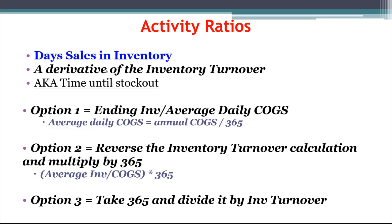We can take a derivative of the inventory turnover ratio to calculate days sales in inventory, sometimes referred to as the time until stock-out. It tells us two things: how many days on average it will take us to sell this inventory, and if we couldn't buy any more inventory due to supply chain issues, how long our inventory will last until we stock out. The options are the same as with days sales in accounts receivable: ending inventory divided by average daily cost of goods sold, or reverse the inventory calculation and multiply by 365, or take 365 divided by the inventory turnover ratio.